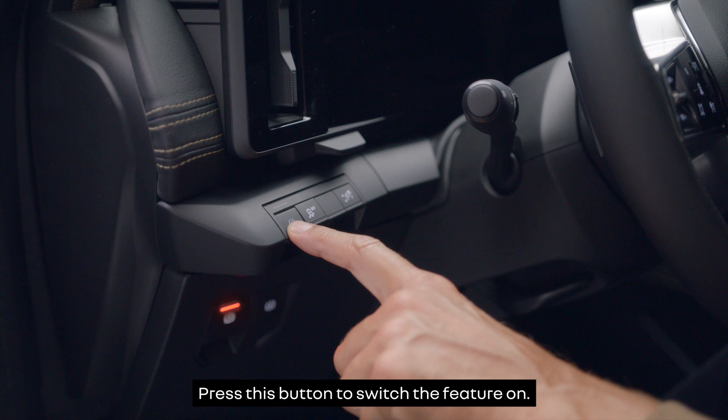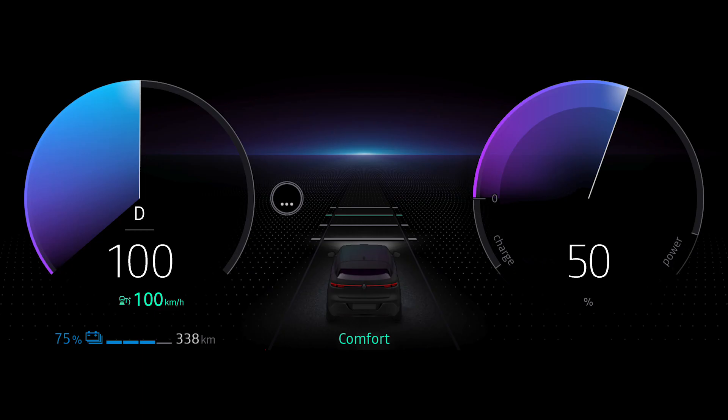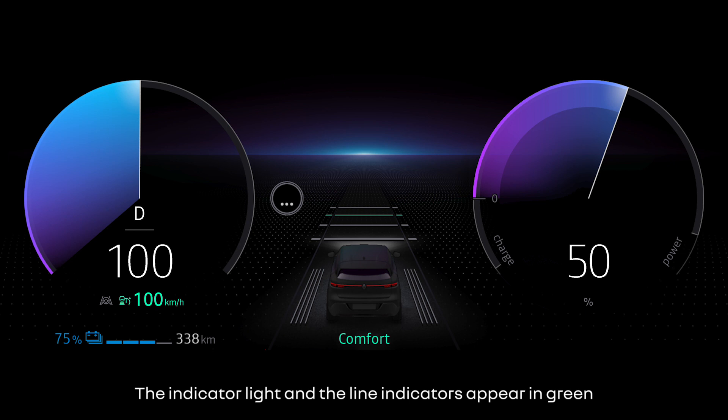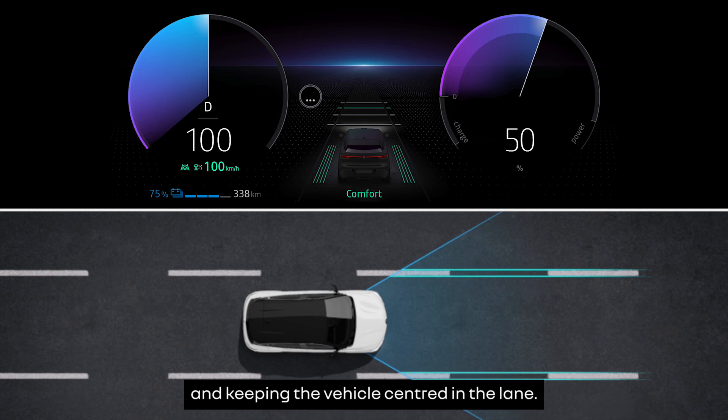Select Lane Centering Assist and press this button to switch the feature on. The message 'Lane Keeping System Activated' appears on the instrument panel along with an indicator light to confirm the feature is running. The indicator light and the line indicators appear in green when Lane Centering Assist is on and keeping the vehicle centred in the lane.